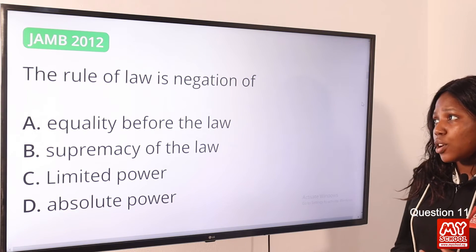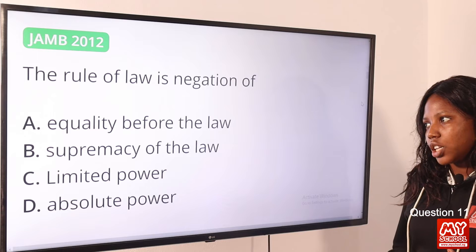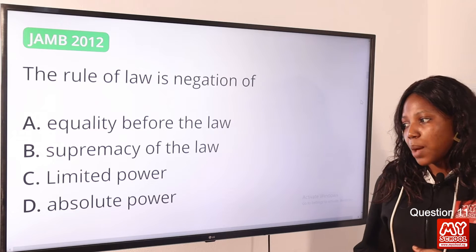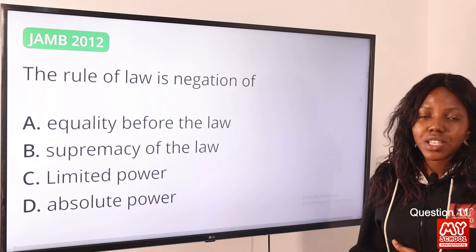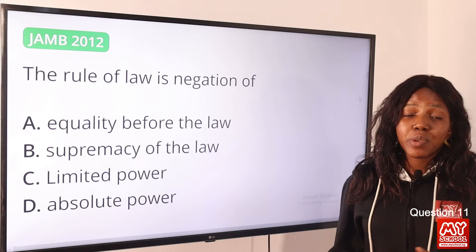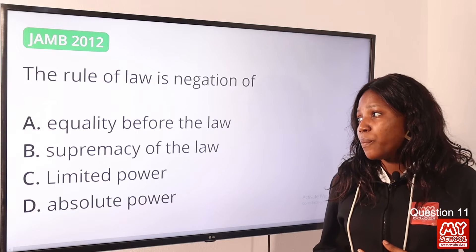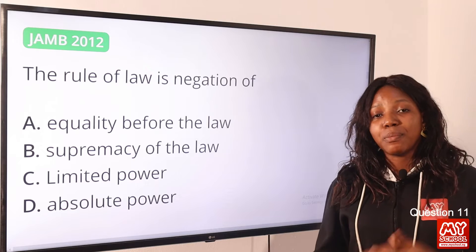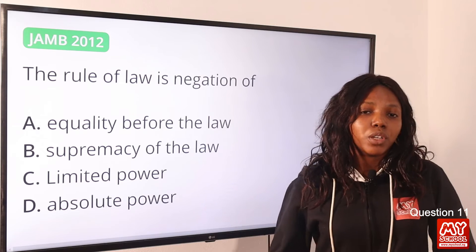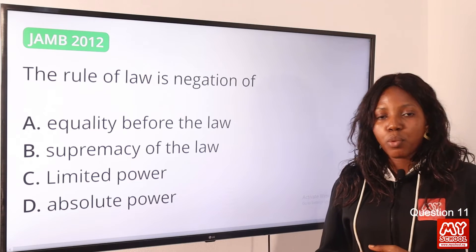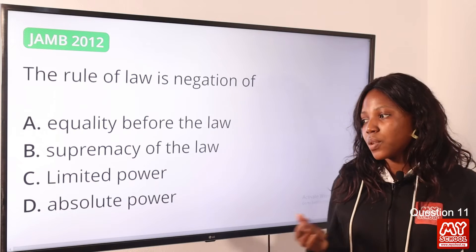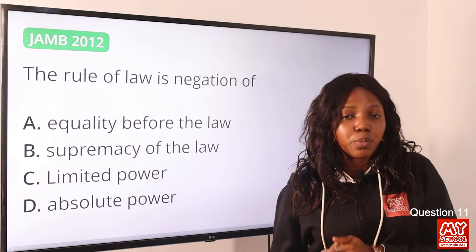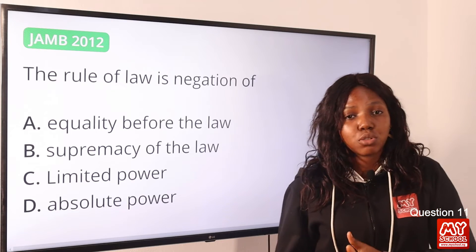Question 11: The rule of law is the negation of — option A: equality before the law; option B: supremacy of the law; option C: limited power; option D: absolute power. The answer is absolute power. Rule of law is the supremacy of law over everyone. Equality before the law, supremacy of the law, and limited power all confirm rule of law. Absolute power contradicts the principles of rule of law. Option D is the correct answer.